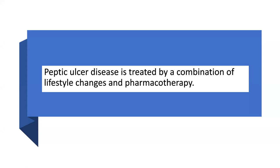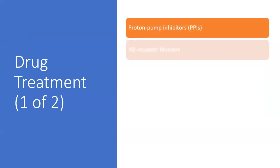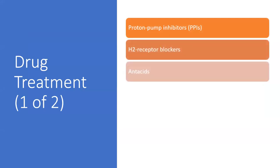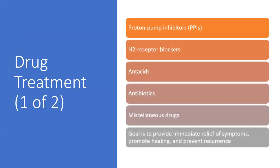Peptic ulcer disease can be treated by a combination of lifestyle changes and pharmacotherapy. Drug treatments include proton pump inhibitors, H2 receptor blockers, antacids, antibiotics, and miscellaneous drugs. The goal is to provide immediate relief of symptoms, promote healing, and prevent reoccurrence.